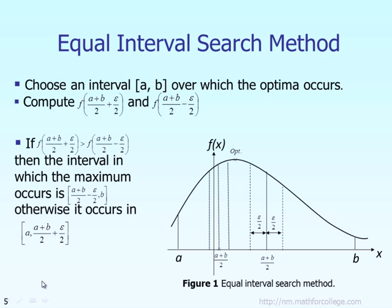Let me explain the fundamental concept first. The first thing I want to introduce is about the equal interval search method. Now, suppose I have a function f of x, and that function, as you can see, is plotted on the screen. In this function, I assume it is a unimodal function, which means it has only one local maximum or only one local minimum. When you plot it, a function will look like this red curve right there.